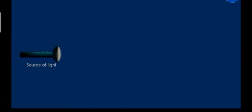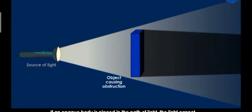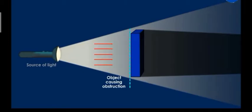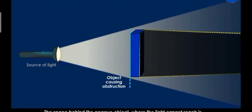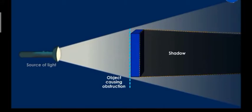Next, let's learn about shadow and how a shadow forms. You can see here there is a torch which is a source of light. We place an opaque object before the light — light cannot pass through this object. So on the opposite side of the object, a dark area occurs. This is called a shadow.